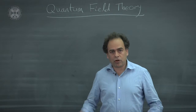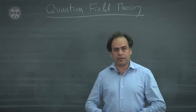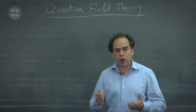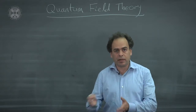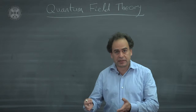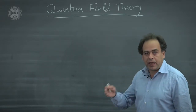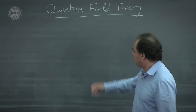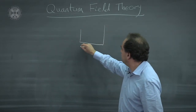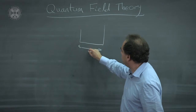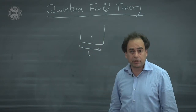I would like to explain, on general grounds, why it is the case that in a relativistic quantum theory we cannot assume that the number of particles is fixed in advance. Let us take, for example, the case of a single particle in a box. Let the box be of length L, and we have a single relativistic particle inside.